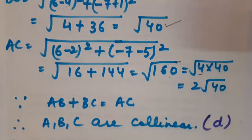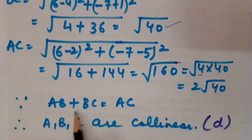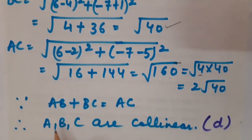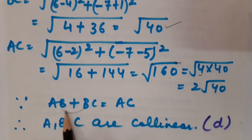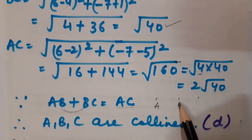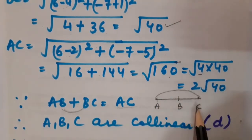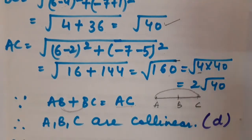We observe that AB + BC = AC, meaning √40 + √40 = 2√40. Since the sum of the two shorter distances equals the longer distance, points A, B and C are collinear. So the right option is option number D.